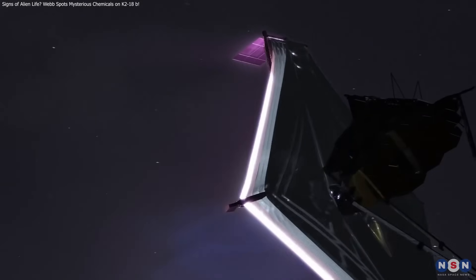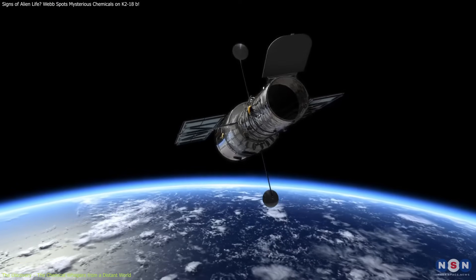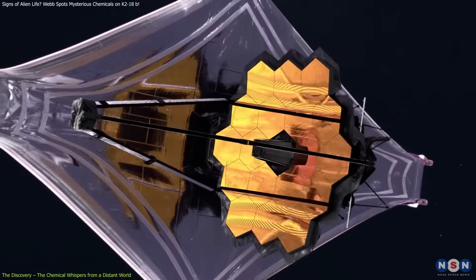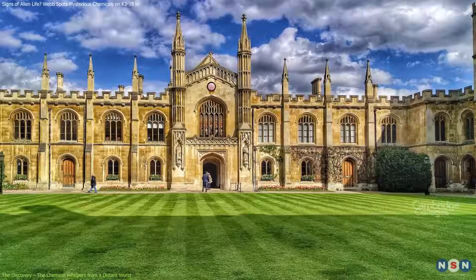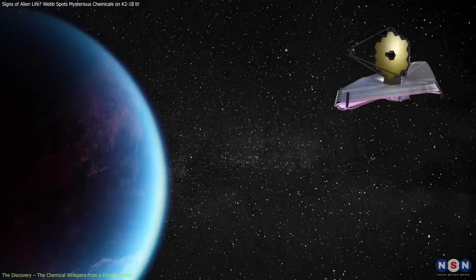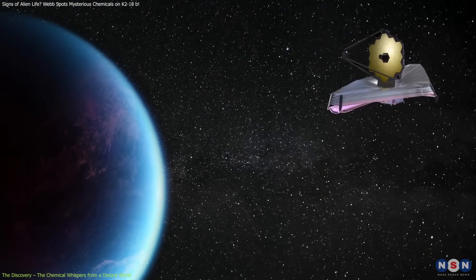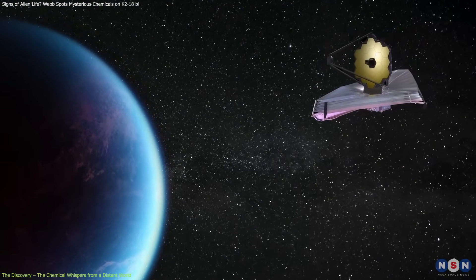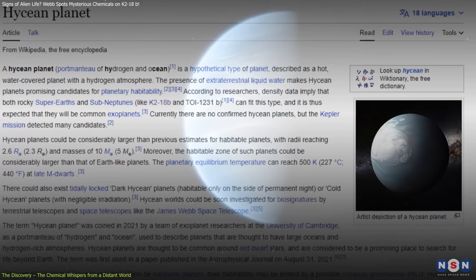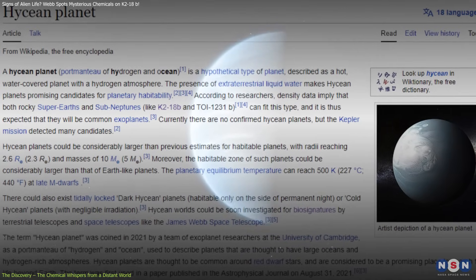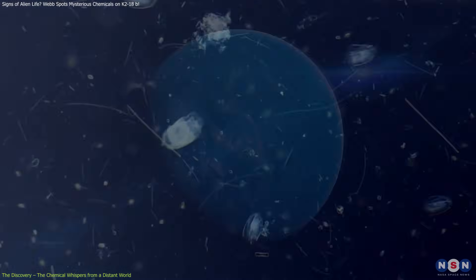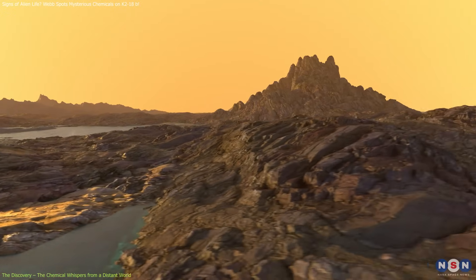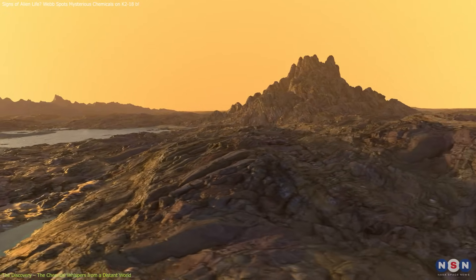The James Webb Space Telescope, often called the successor to Hubble, is transforming our ability to explore the cosmos. In a recent study led by Professor Niku Madhusudan from the University of Cambridge, Webb turned its infrared gaze on K218b, a Haitian world—a type of exoplanet believed to host oceans under hydrogen-rich skies. These planets are emerging as strong candidates in the hunt for life due to their potential to support liquid water and maintain stable climates.